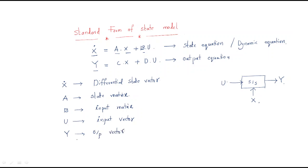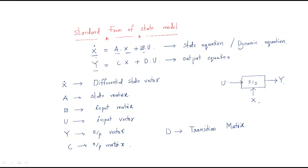C is the output matrix — its name indicates it relates to output. D is the transition matrix. So these are the different terms in the standard state model equations, and we will understand each of them.